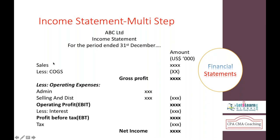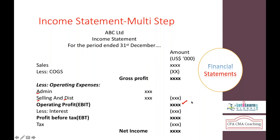Sales represent total net revenues generated from products or services after deducting returns and allowances. Sales minus cost of goods sold gives us gross profit. Gross profit minus operating expenses (opex) gives us operating profit, also known as EBIT — Earnings Before Interest and Taxes. From gross profit, we deduct admin, selling, and distribution expenses to arrive at EBIT, which shows the performance of a business from its core operations.